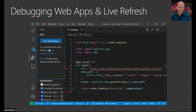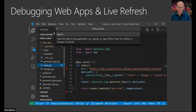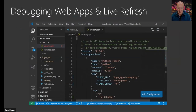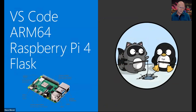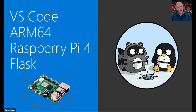The next thing I want to show is debugging web apps with live refresh. This is something new that was released about two weeks ago. The way I'm going to do this demo is on VS Code on ARM64. We've now released a native version for ARM64, so you can run it on a Raspberry Pi — ARM64 on Raspberry Pi 4 or ARM32 on smaller earlier Raspberry Pis.